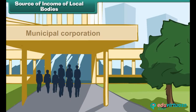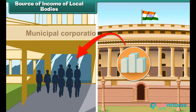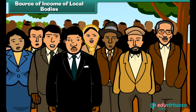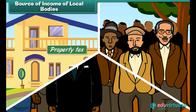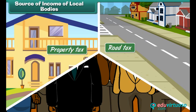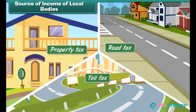Local bodies get money for provision of services from the respective state governments. The state governments in turn get the money from their citizens through property taxes, road taxes, and toll taxes.